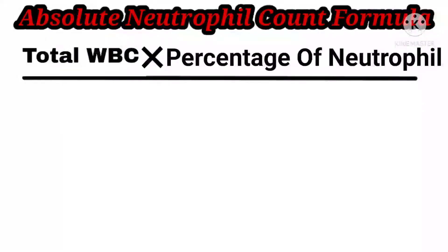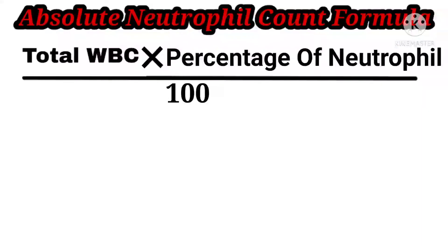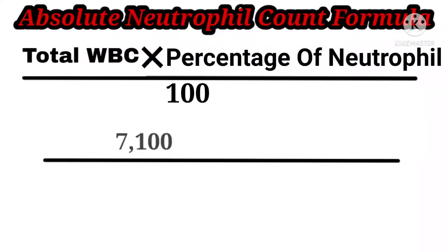Now coming to the point: the formula for Absolute Neutrophil Count is total count of WBC multiplied by the percentage of neutrophil, divided by 100. I have made a video on how to calculate the percentage of neutrophil, lymphocyte, monocyte, eosinophil, and basophil — I will give a link at the end screen. For example, suppose 7100 is the total count of WBC; multiply that by 62, which is the percentage of neutrophil, and divide by 100.